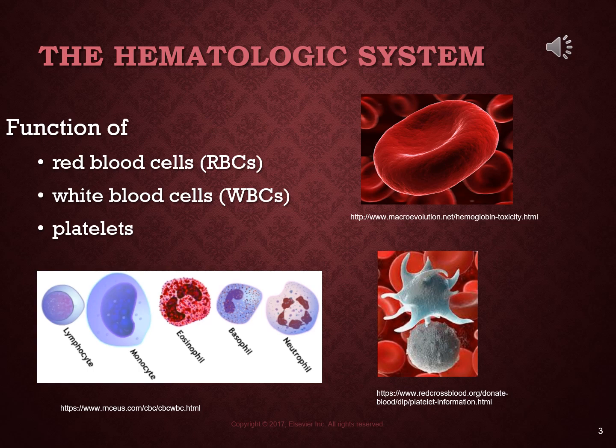Red blood cells live for about 120 days. When they break down, they are phagocytized by macrophages in the liver, the spleen, and the bone marrow. Hemolysis is the destruction of red blood cells — all components of the red blood cells are released, broken down, and excreted from the body as bilirubin. When you have abnormal hemolysis, this increases your bilirubin level and you become jaundiced.